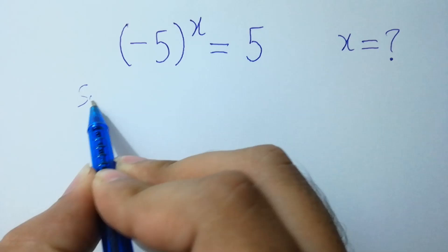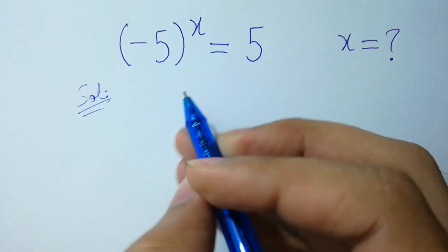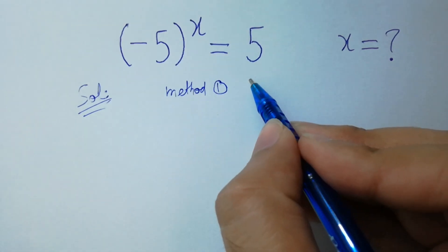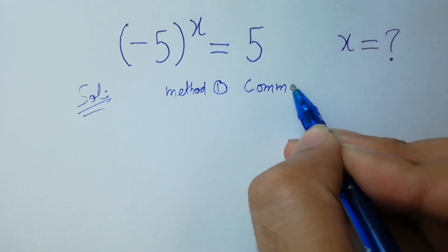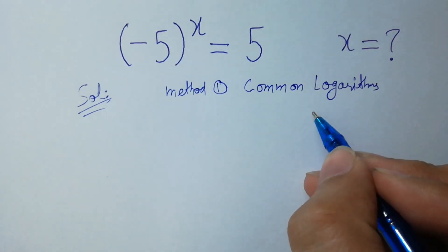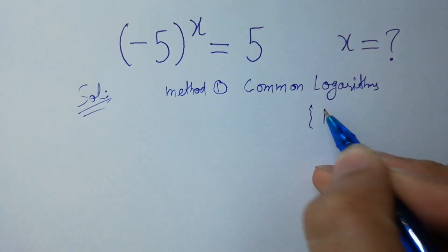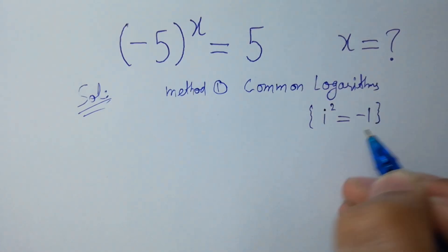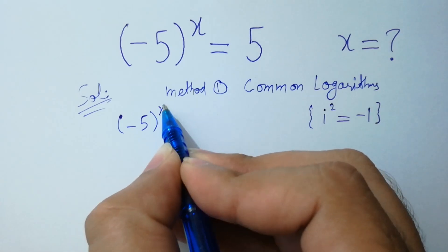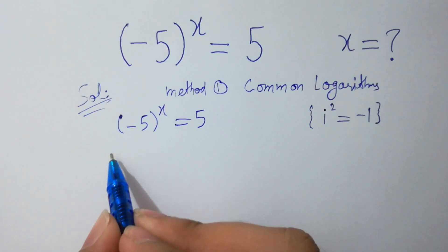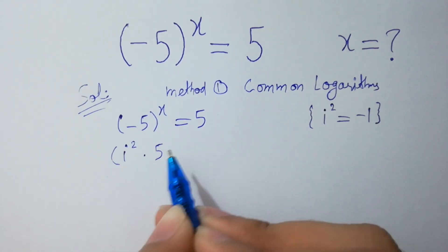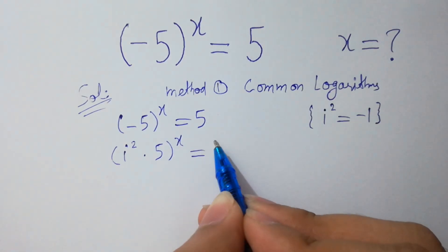I am going to apply Method 1, which is common logarithms. As we know that i squared equals negative 1 in complex numbers. So, negative 5 to the power x equals 5 can be written as i squared times 5, to the whole power x, equals 5.